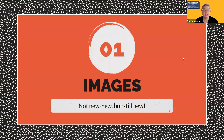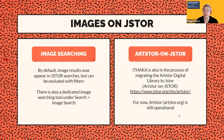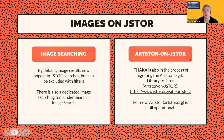Images on JSTOR aren't brand new, but it's still a relatively new feature. Over the past 18 months, they've started integrating image results into JSTOR searches. When you do a search, image results will appear by default at the top of your text searches. You can exclude them using filters, but JSTOR also has a dedicated image searching tool accessible under Search, then Image Search.